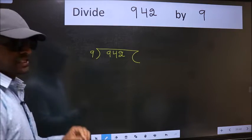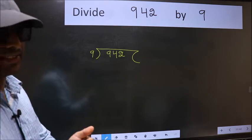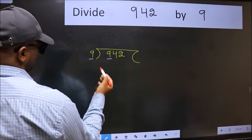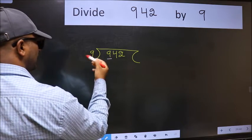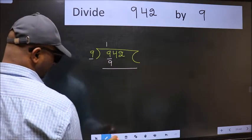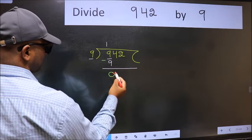This is your step 1. Next, here we have 9 and here 9. When do we get 9 in the 9 table? 9 once is 9. Now we should subtract. We get 0.